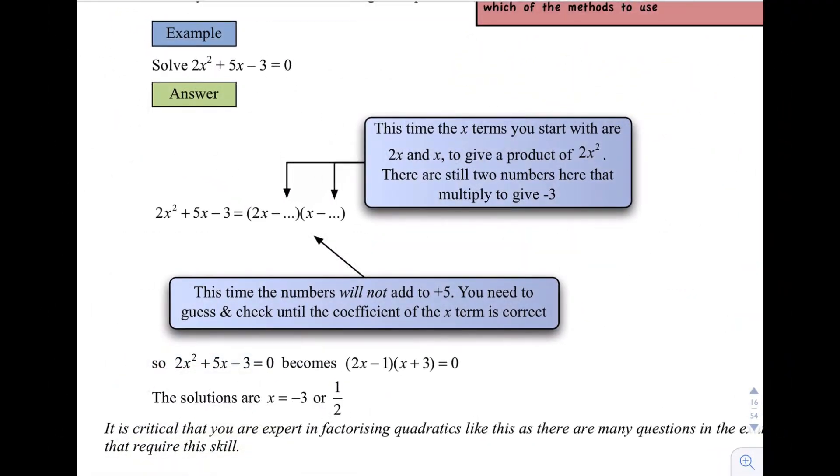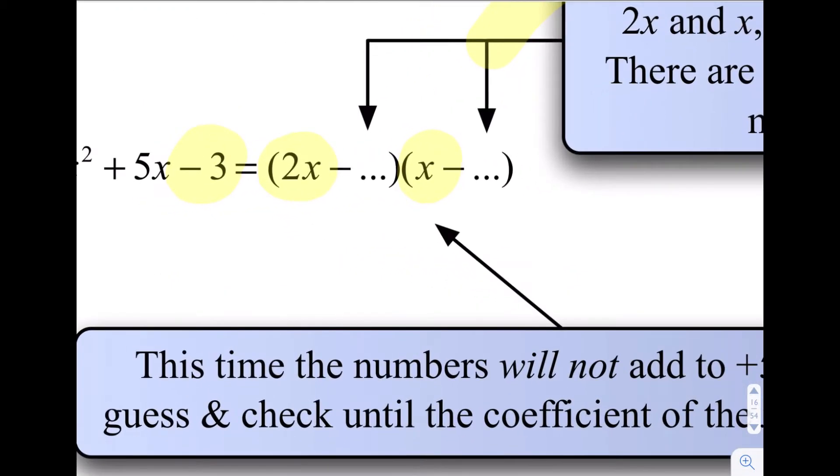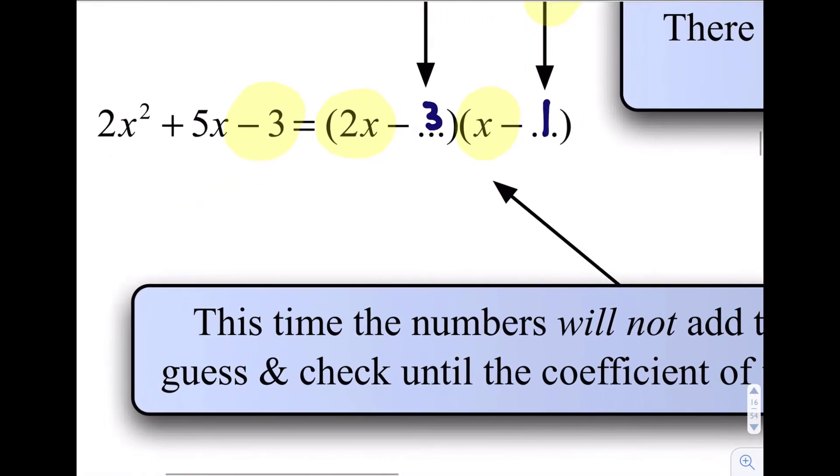In this second example, you'll notice that the coefficient, that is the number in front of the x squared term is not one, it's two, makes things a little bit trickier. It just means that you have to start off with two x and x in these brackets here. You still need two numbers that are going to multiply to give me this last term here, three, and then it's just a little bit of a guessing game. I think that's the easiest way that I do it. So two numbers that multiply to give me three, so I could try three here and one here, so there's only really one choice. When I do that, I get 2x squared there, I get 2x there, and I get a 3x there, and I want to get plus 5x.